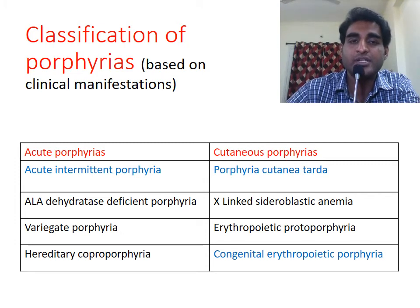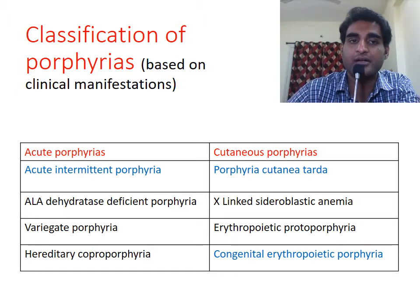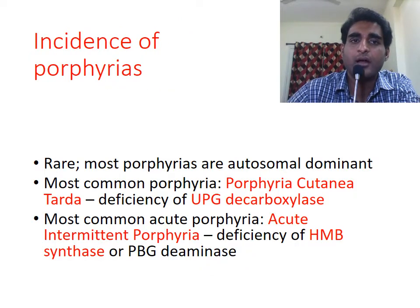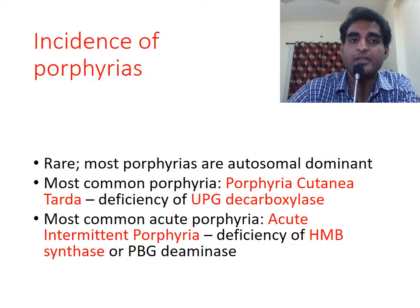Porphyrias can also be classified based on clinical presentations as acute and cutaneous porphyrias. Acute intermittent porphyria is an example of the acute type, while congenital erythropoietic porphyria and porphyria cutanea tarda are examples of cutaneous porphyrias.